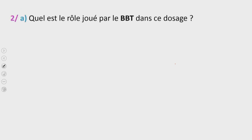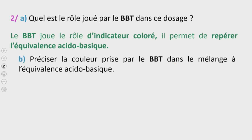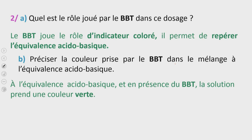La deuxième question était : quel est le rôle joué par le BBT dans ce dosage ? Le BBT joue le rôle d'indicateur coloré. Il permet de repérer, de détecter l'équivalence acido-basique. À l'équivalence acido-basique, en présence du bleu de bromothymol, la solution prend une couleur verte.